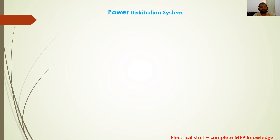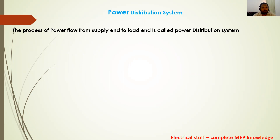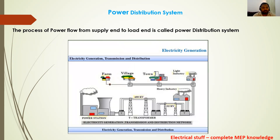So what is a power distribution system? The process of power flow from the supply end to the load end is called a power distribution system. There is a graphical representation of the power generation system.